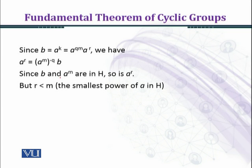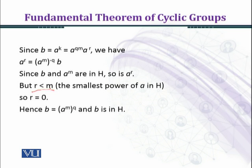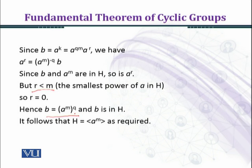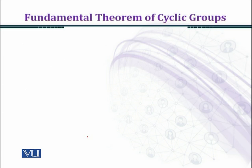Since a^r is in h and r < m, where m is the smallest power of a in h, we must take r equal to 0. Hence b equals a raised to the power m, raised to the power q, and b is in h. It follows that h is the group generated by a raised to the power m, as required.